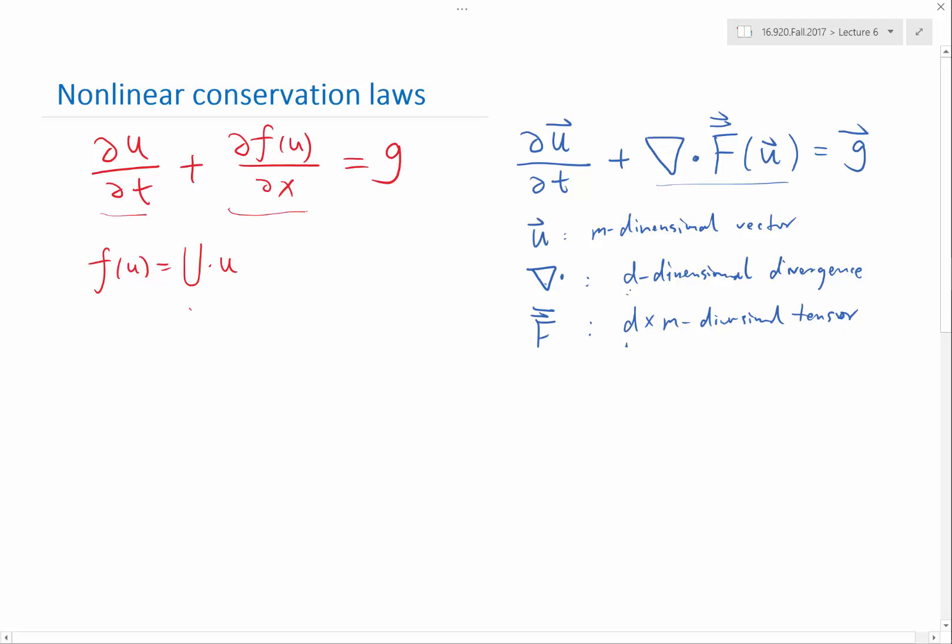And we'll generalize this behavior a little bit later that the solution goes left or right actually depends on df du, where in this linear case, df du is going to be just a constant big U.